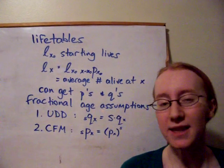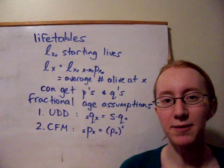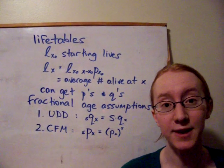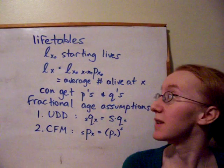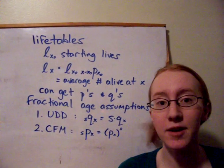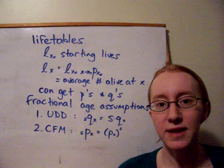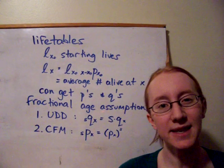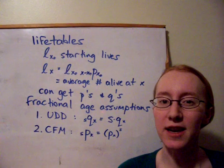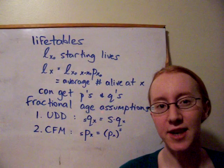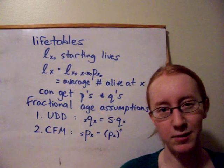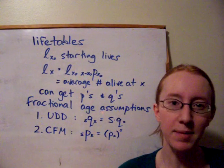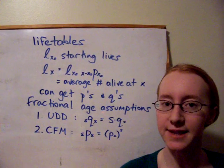With this life table information, what we have is a sequence of values LX, and the first value is LX0, and we say that that's basically the number of starting lives that are age X0. Normally X0 is equal to 0, so I might sometimes call it L0.